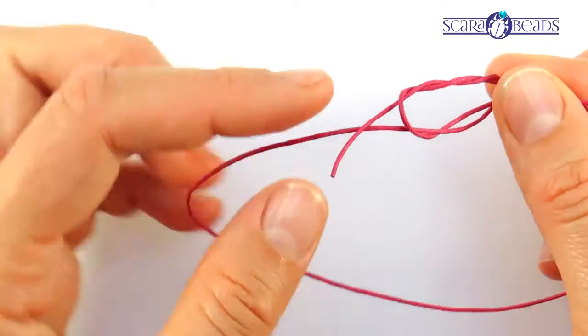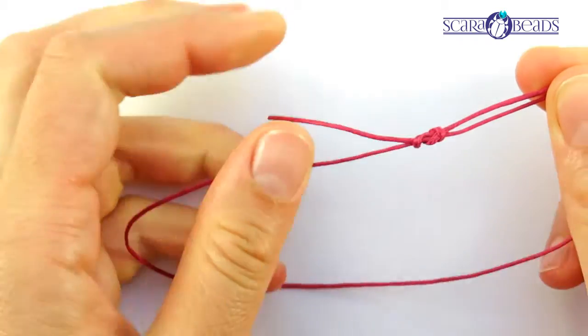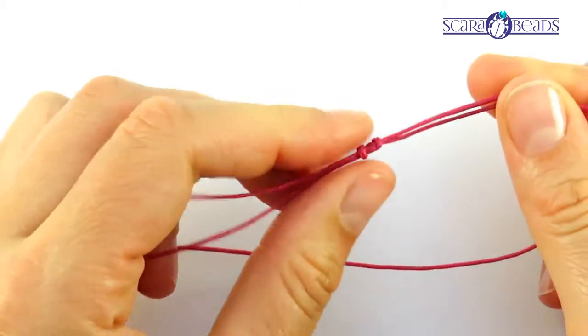In my case, from the right side both threads are looking up and on the left down. This is a weaver's knot.